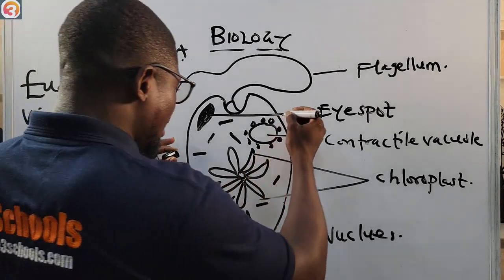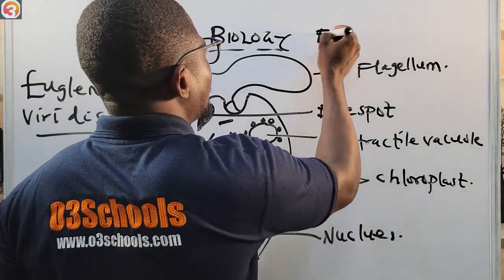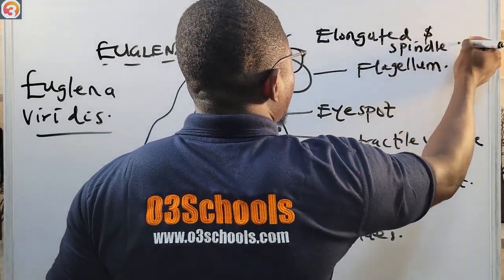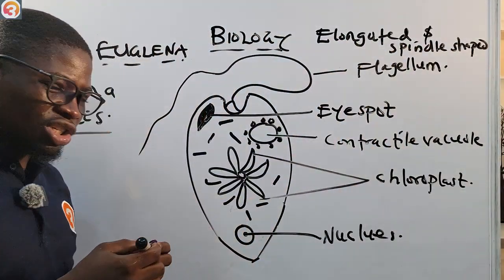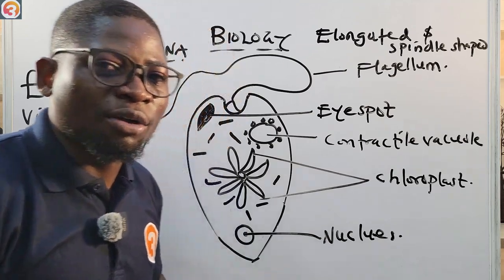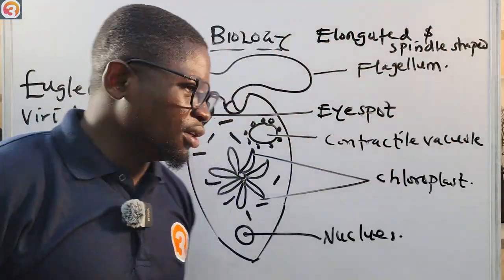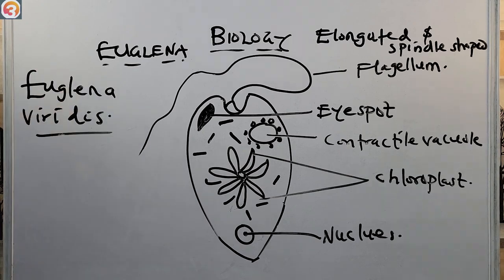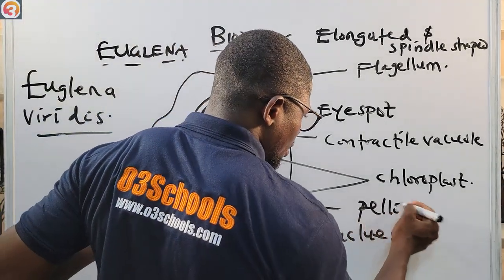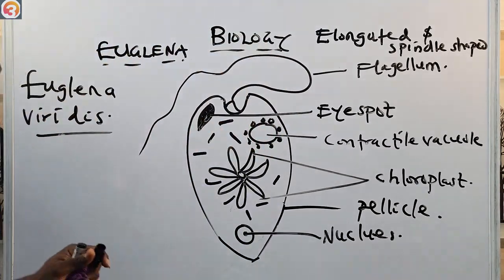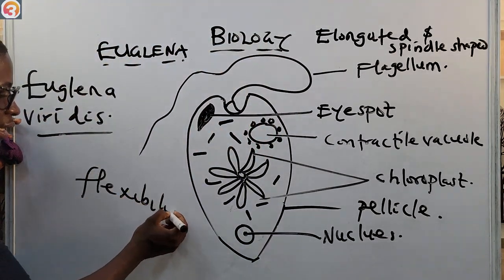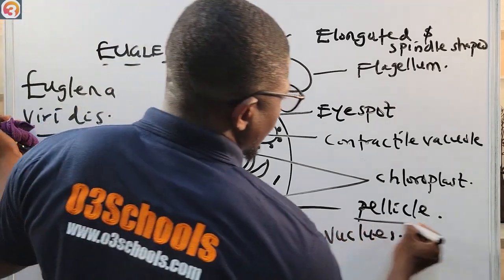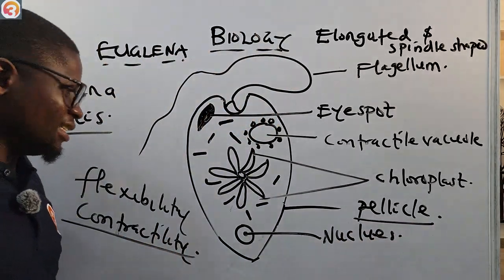The Euglena — also called Euglena viridis — is elongated and spindle-shaped. The body is covered with a pellicle. This pellicle gives it flexibility and contractility.